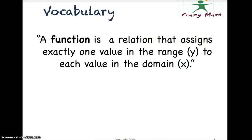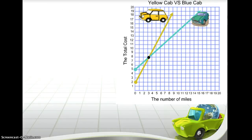Let's remember that a function is a relation that assigns exactly one value of y to each value of x. So for every y value there's an x value. Now let's look at a real life situation graph.